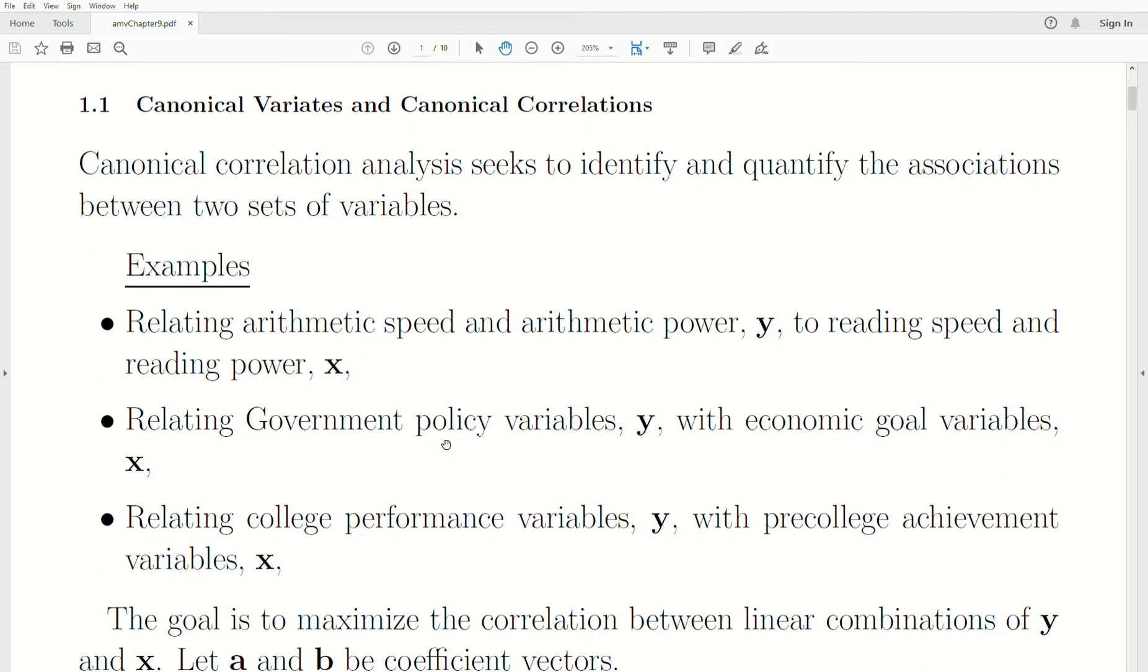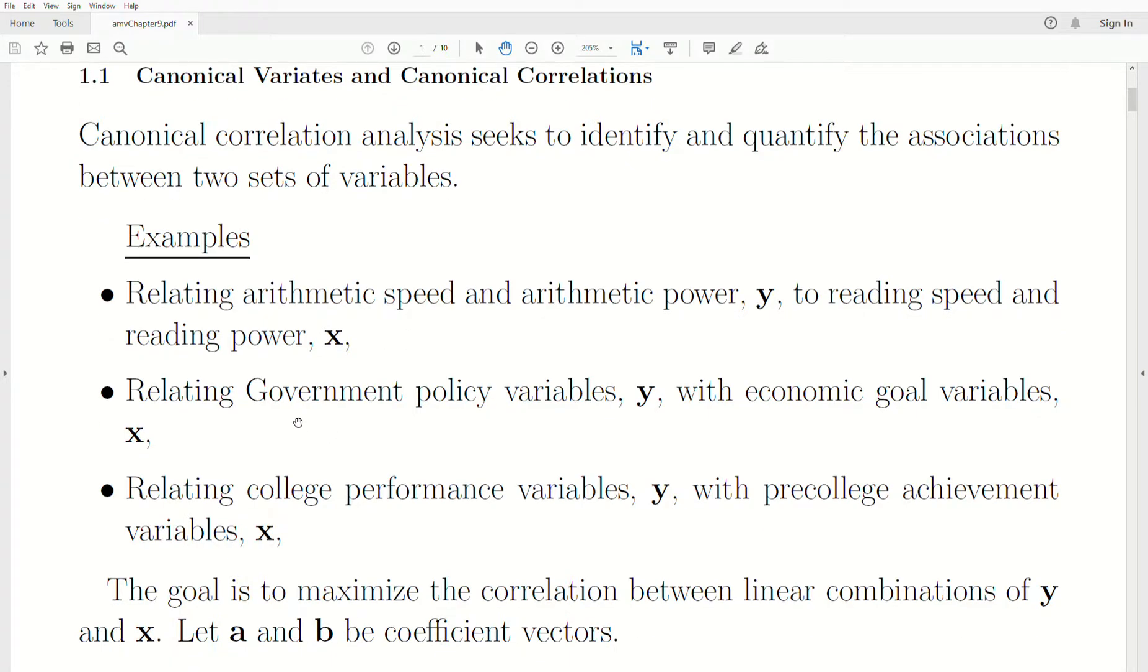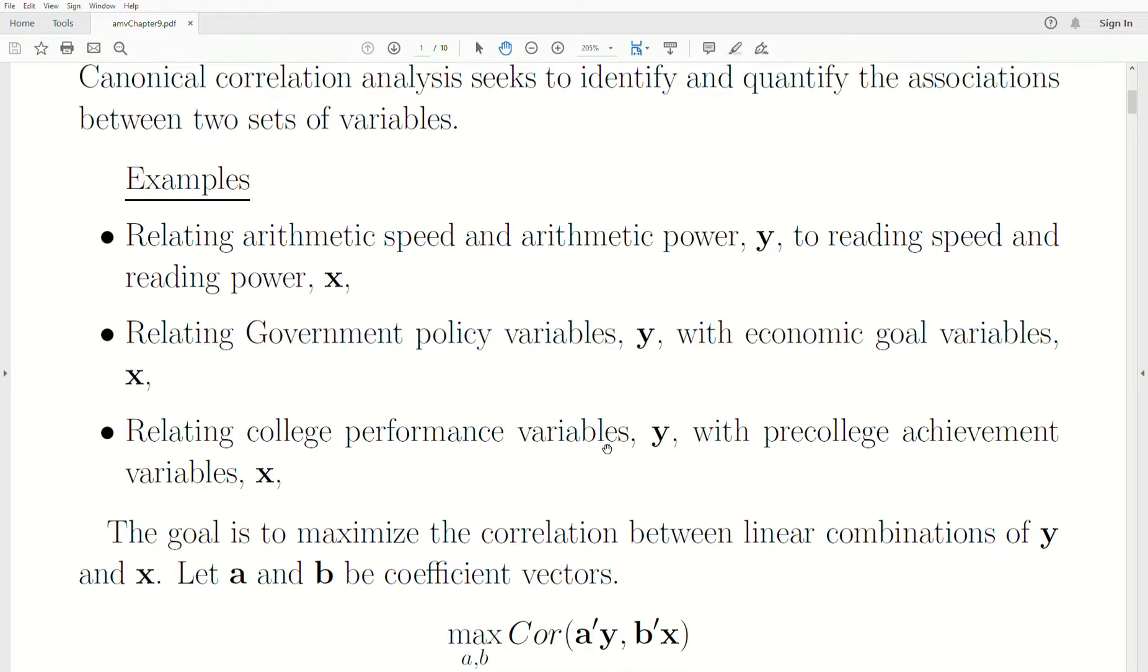So here's some examples relating arithmetic speed and arithmetic power to reading speed and reading power. This is actually one of the first examples ever done with canonical correlation. It was developed by Hotelling, and I think this was the example that he illustrated it with. Another example is relating government policy variables with economic goal variables. Relating college performance variables with pre-college achievement variables.